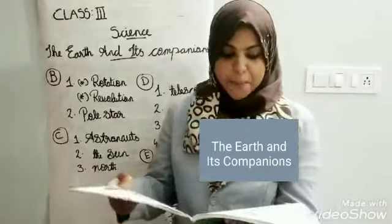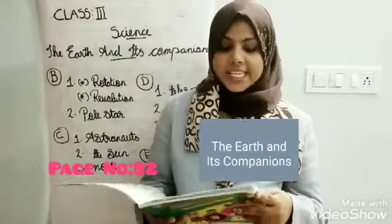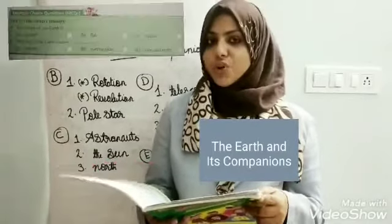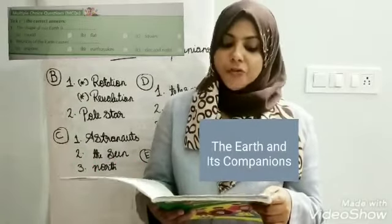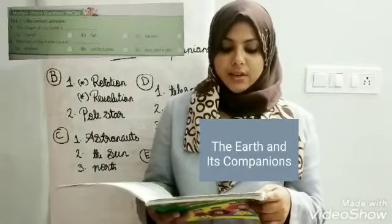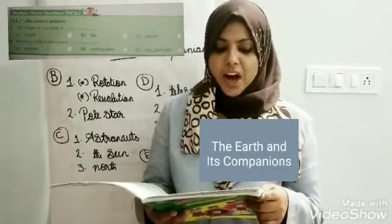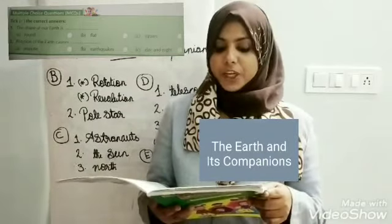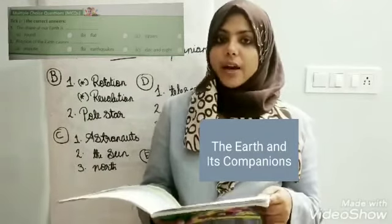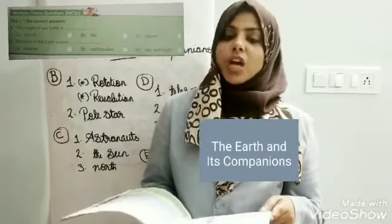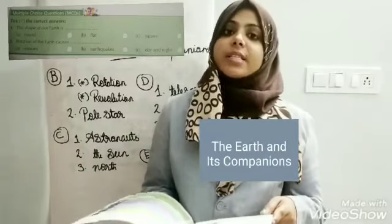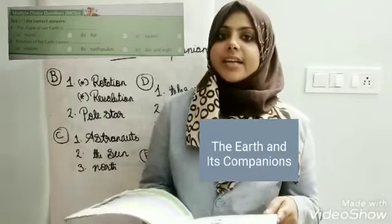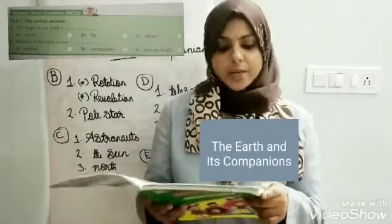All of you take page number 82. Can you see the MCQ questions? First question: the shape of our Earth is — Option A: round, Option B: flat, Option C: oval. We know the shape of our Earth is round like an orange, so the right answer is Option A: round.